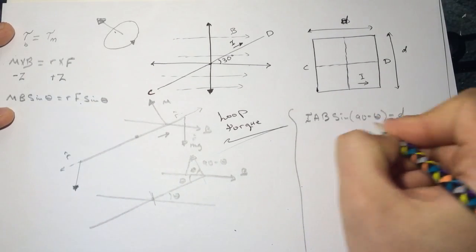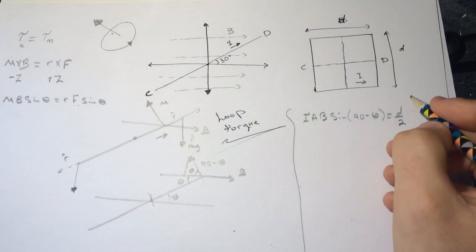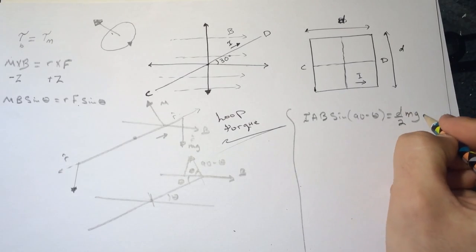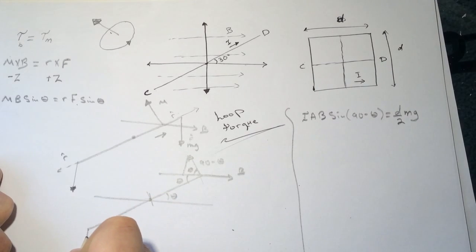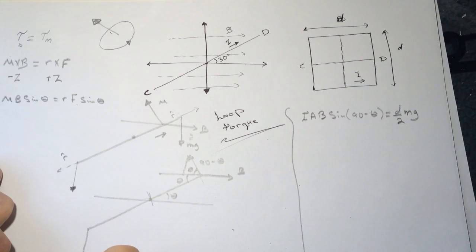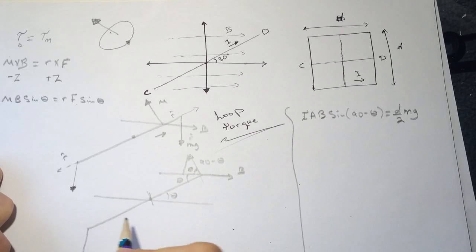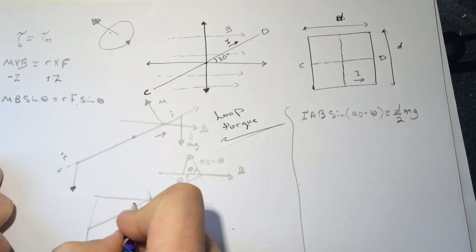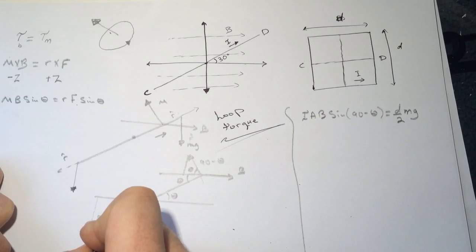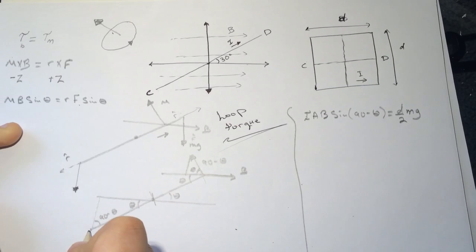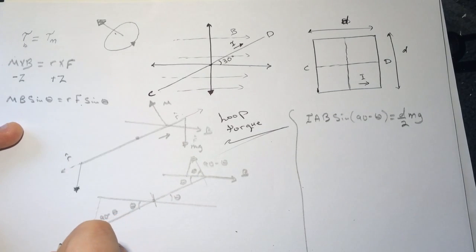We're looking at the theta again. The mg will be pointing down - this is mg. Let's connect this here, and this is theta. This will be 90 minus theta. If we extend this more, we need the component of mg which is perpendicular to R.